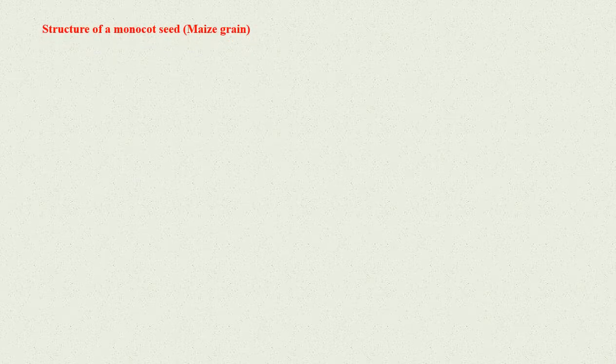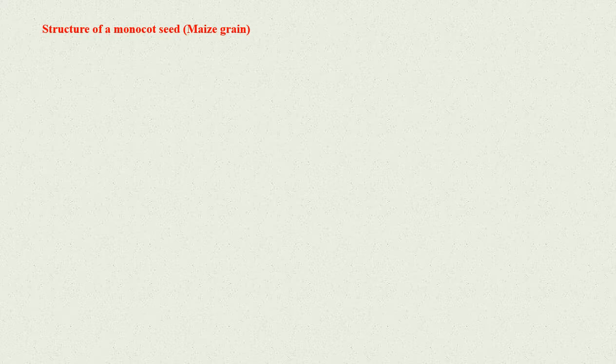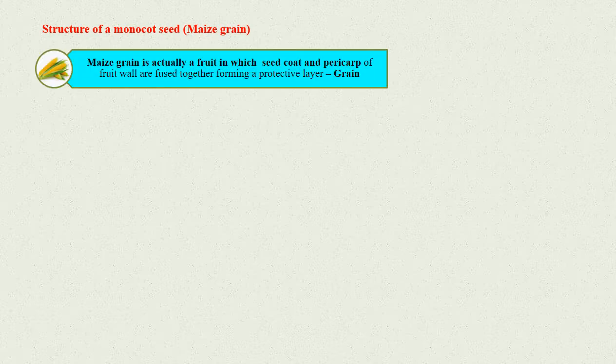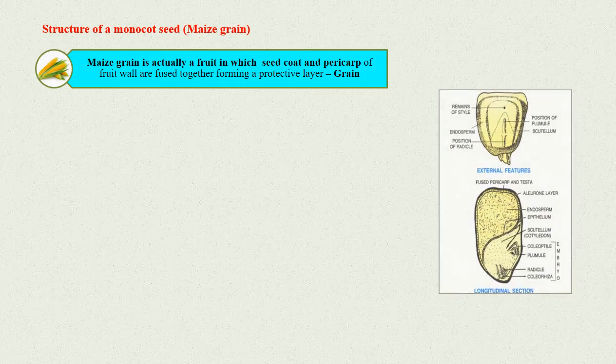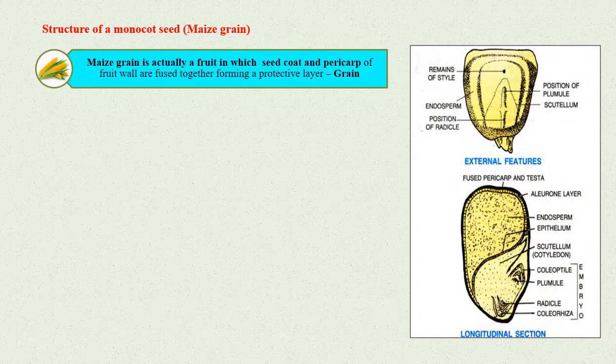Structure of a monocot seed - Maize grain: The structure of a monocot seed can be studied by taking an example of maize grain. A maize grain is actually a fruit in which the seed coat and pericarp of the fruit wall are fused together, forming a protective layer.